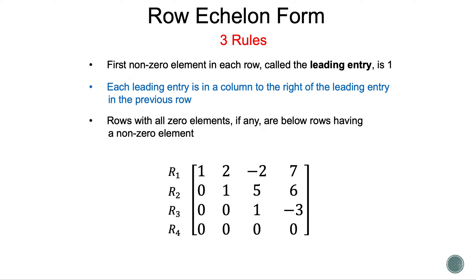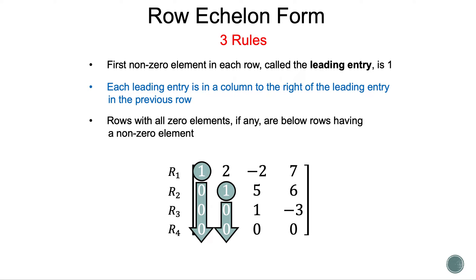The first part: all the numbers below the leading entry must be 0. Part 2: the next leading entry must be to the right of the previous one. In row 1, we have our leading entry 1 and all the elements below are 0. In row 2, the leading entry 1 is to the right of the previous one and all the elements below are 0. In row 3, the leading entry 1 is to the right of the previous one and the element below it is 0. Row 4 doesn't have a leading entry.